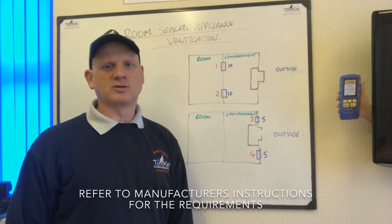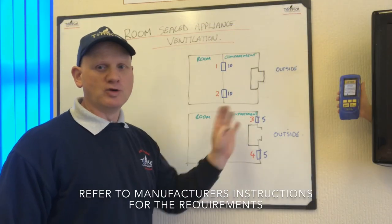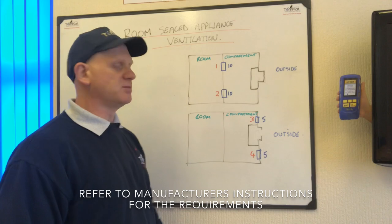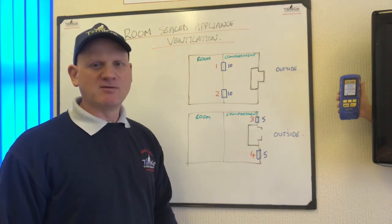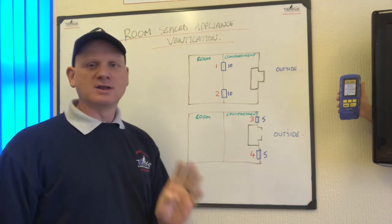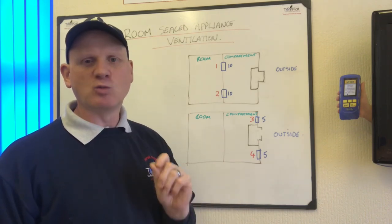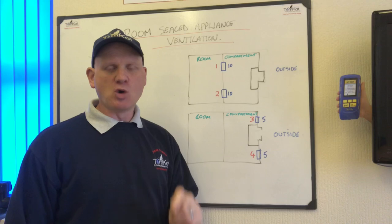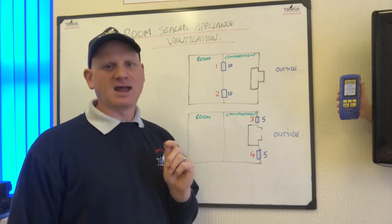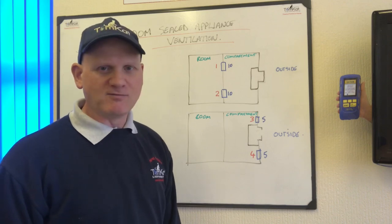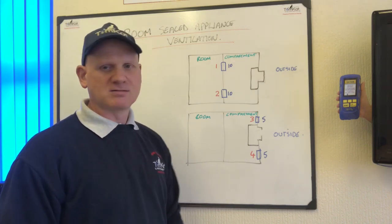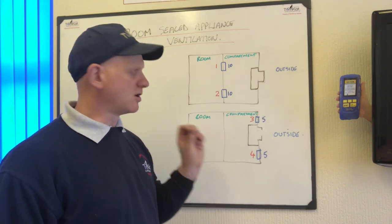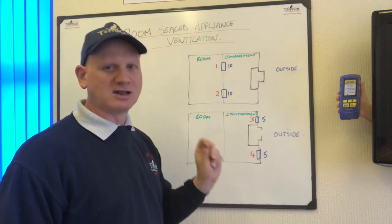The next part we're going to look at is compartment ventilation for room sealed appliances. This is different from open flued because room sealed appliances only need compartment ventilation for cooling, and only if they are high water content cast iron heat exchangers. There are no condensing boilers on the market at the moment that require compartment ventilation for cooling — it's the old balanced flued boilers.